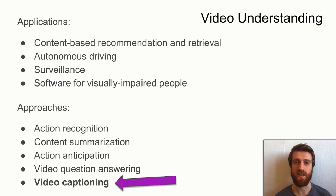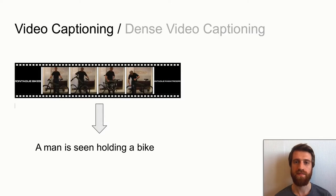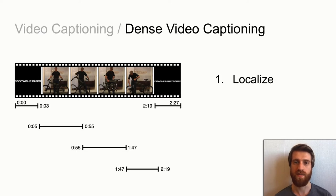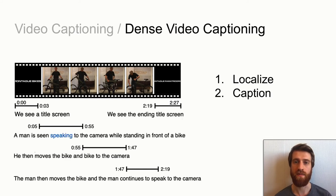The task of video captioning requires a model to generate a sentence or paragraph describing video content. However, it's difficult to describe a 19-minute movie in one sentence. It was proposed to first localize events in the video and then generate a caption for each event. This problem is called dense video captioning.